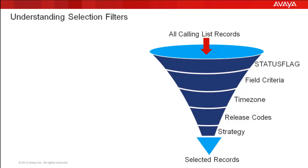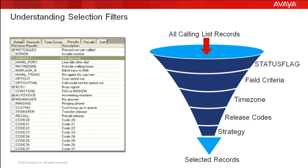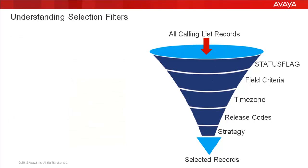The next filter is for the release codes. Here you would select the release codes for your selection from the editor application. Basically, you are selecting the records where the code field in the calling list has one of the completion codes that you have selected. The ones that meet the criteria are passed through and the ones that don't are discarded at this filter.